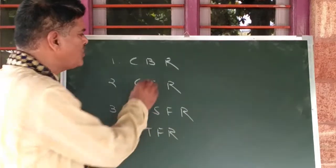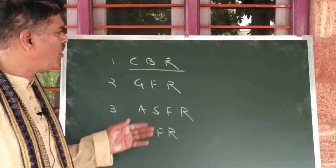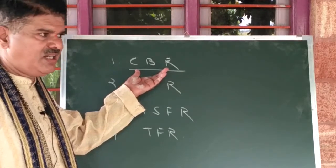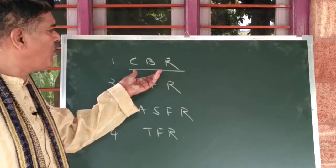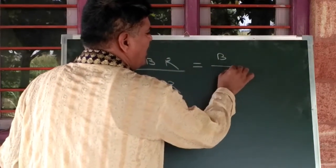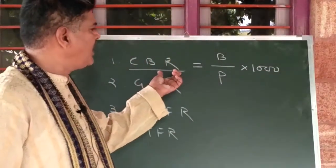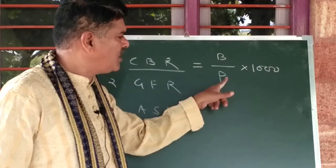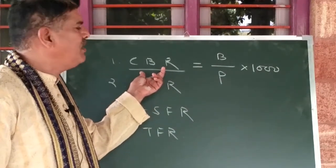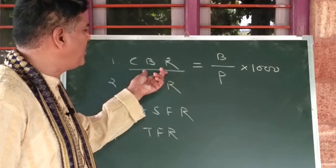So what is the crude birth rate? Like the crude death rate, it is a crude rate that gives some sort of information about the fertility of a population. Crude birth rate is equal to the number of live births divided by the population size, multiplied by 1000. So crude birth rate is the number of live births per 1000 population, and it is a measure of fertility that gives some glimpse about births in that particular population.